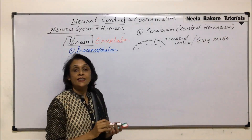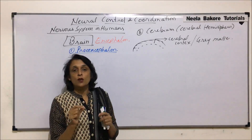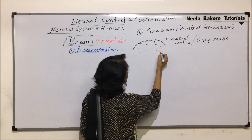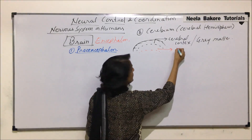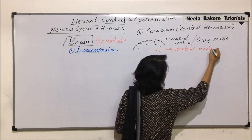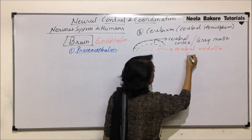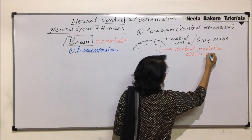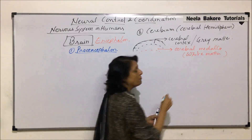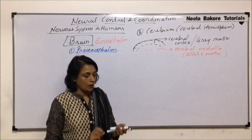Whereas the inner part, which has only the axon part of the neuron, is the medulla region and it is known as the cerebral medulla. It is also known as white matter because it has only the myelinated neuron fibers, that is the axons.